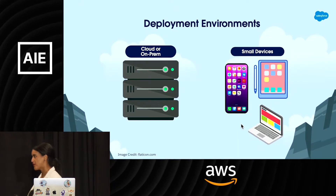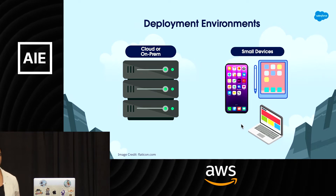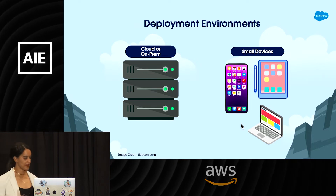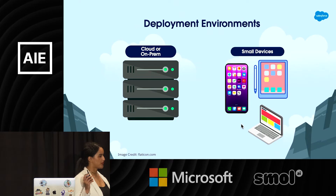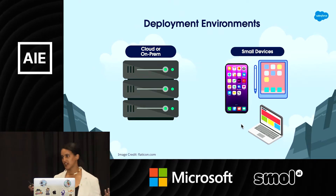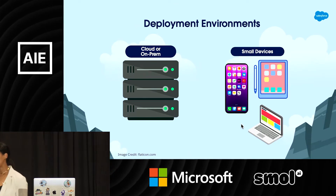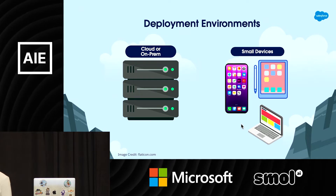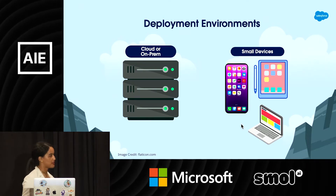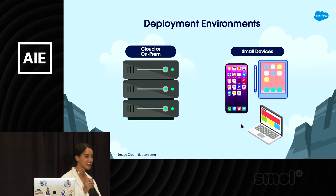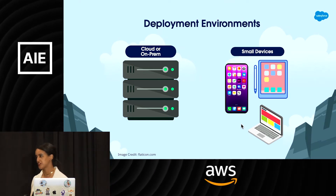We're all working on the same deployment environment, so let's review that. When we've got an AI model, we're mostly deploying on a cloud — private or public. We're paying for resource consumption: GPU, CPU, disk space. When we deploy, we're paying for that cost to serve.